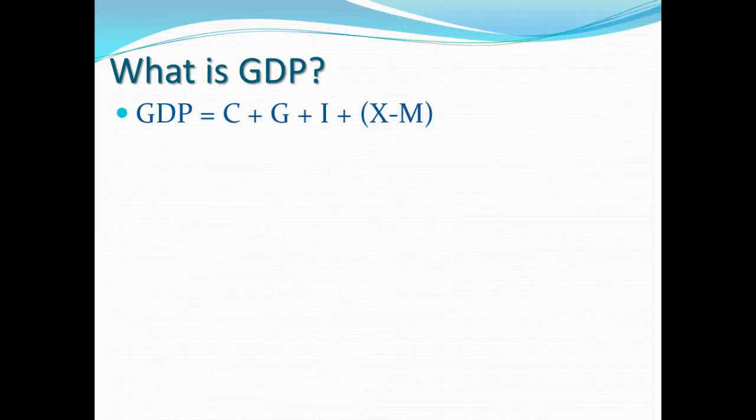As a quick reminder, when we talk about GDP, we're talking about this simple formula that you need to commit to memory: GDP is equal to C plus G plus I plus X minus M. That is, consumption plus government spending plus investment spending plus net exports is what makes up GDP.